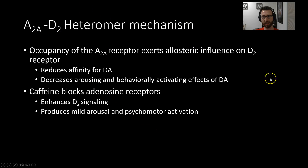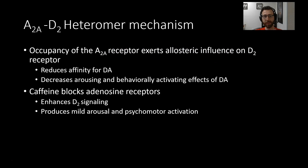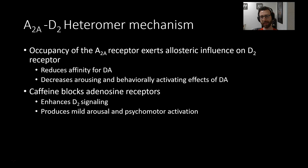This heteromer mechanism is actually super cool. A heteromer is basically just a complex of two different receptor protein systems that interact together and influence one another. They form this complex — a heteromer. The A2A receptor exerts allosteric influence over the D2 receptor. When this happens, it actually reduces the affinity for dopamine and decreases the arousing and behaviorally affecting effects of dopamine. So adenosine, in its natural role, is accumulating and binding to these heteromer complexes, messing with the way that dopamine can normally signal. It's reducing the arousing and behaviorally activating effects of our naturally occurring dopamine. It's sort of like a feedback system — the more adenosine accumulates, the longer you've been awake, and the more profound this effect becomes, leading to a decrease of arousal and behavioral activation.